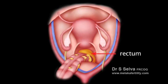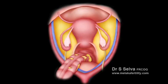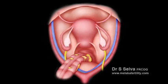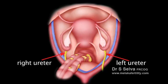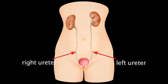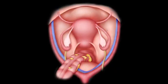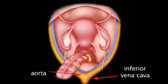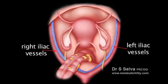In front or anterior of the uterus is the urinary bladder. Behind or posterior to the uterus is the rectum. A slippery membrane called the peritoneum covers the whole pelvis and abdomen. Beneath the peritoneum, on either side of the pelvis, runs the ureters — small tubes that carry urine from the kidney to the bladder. Large blood vessels are present on both sides of the pelvis, carrying blood from the heart to both the legs and back.